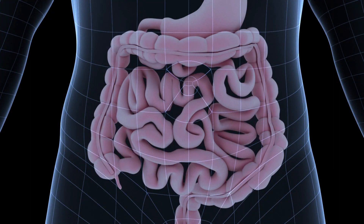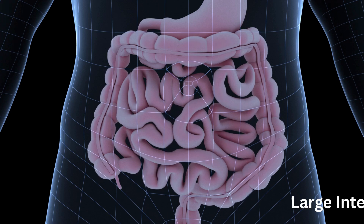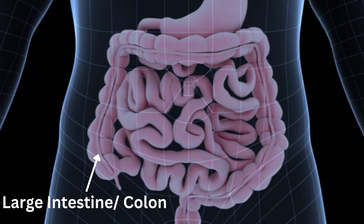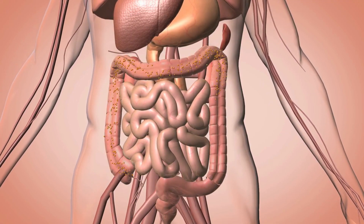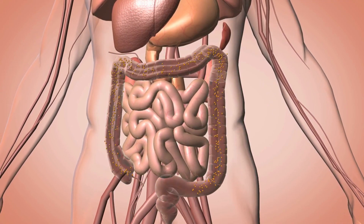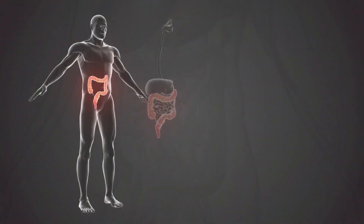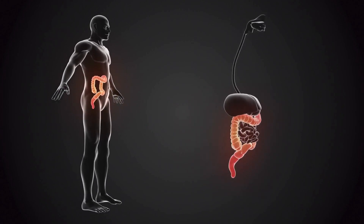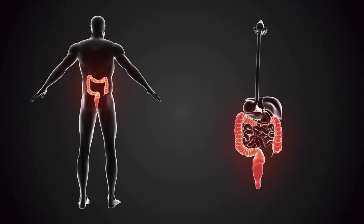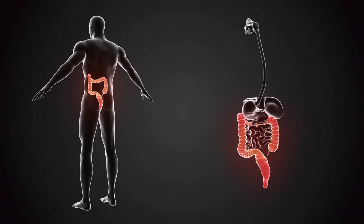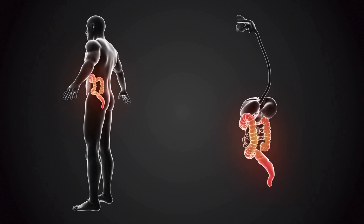As we proceed, we reach the large intestine, also known as the colon. It is responsible for absorbing water and electrolytes from the remaining indigestible food matter, forming feces. The colon is home to billions of beneficial bacteria that aid in the breakdown of undigested fibers.